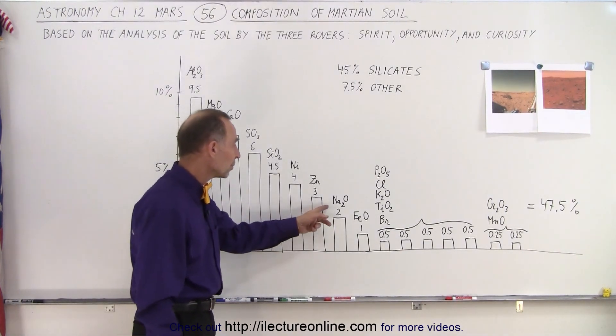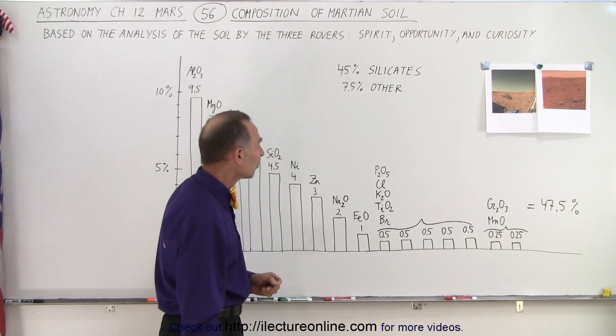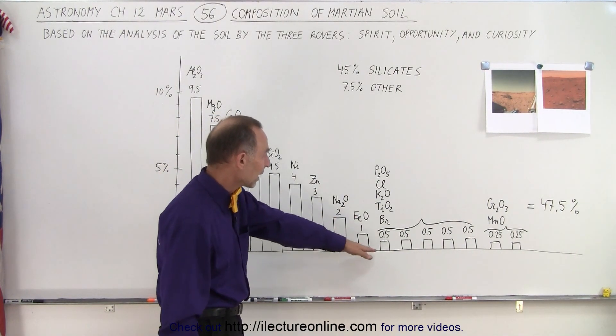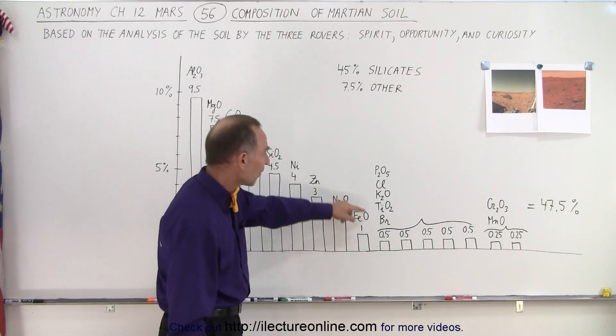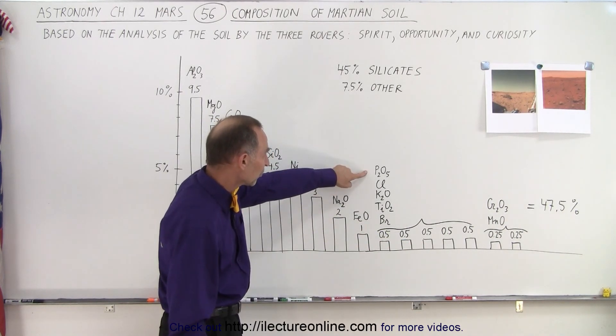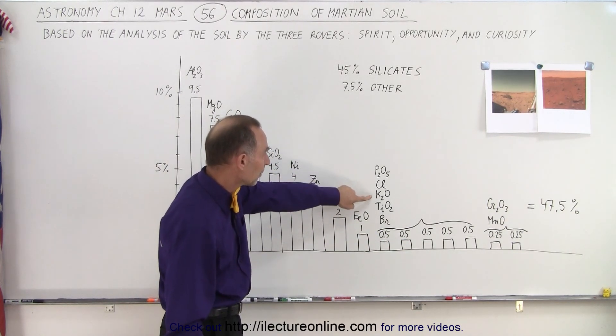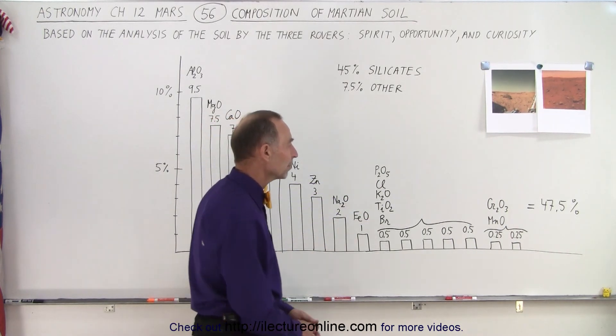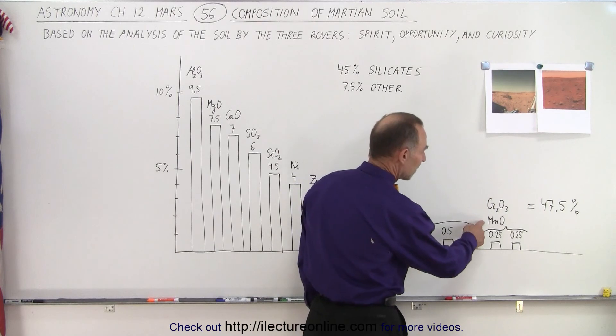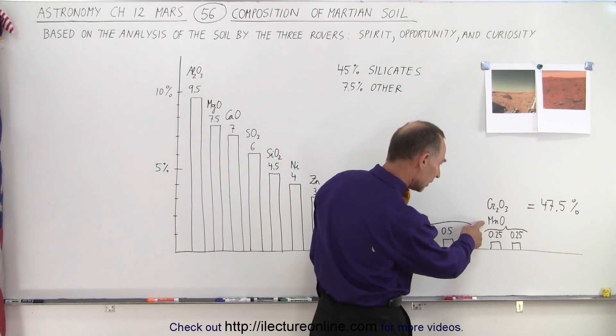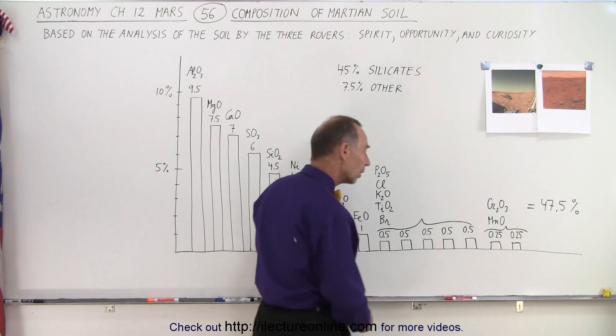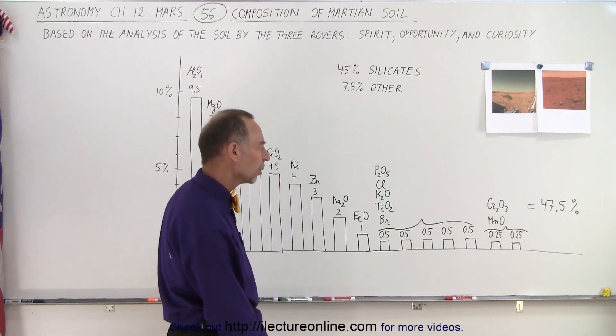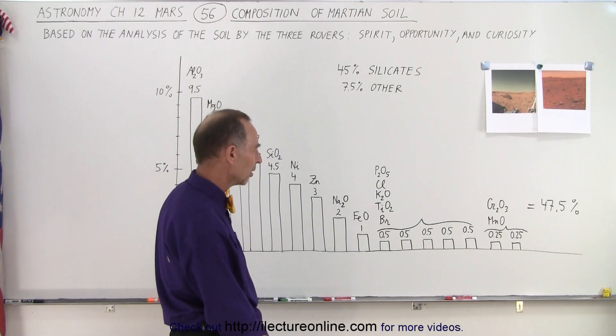Then we have sodium oxide and ferrous oxide. And notice that then we get down to about a half percent for the next five, which is phosphorus pentoxide, chlorine, potassium oxide, titanium dioxide, and bromine. And then we found about a quarter percent of manganese oxide and chromium, that is chromic oxide, I believe they call that.